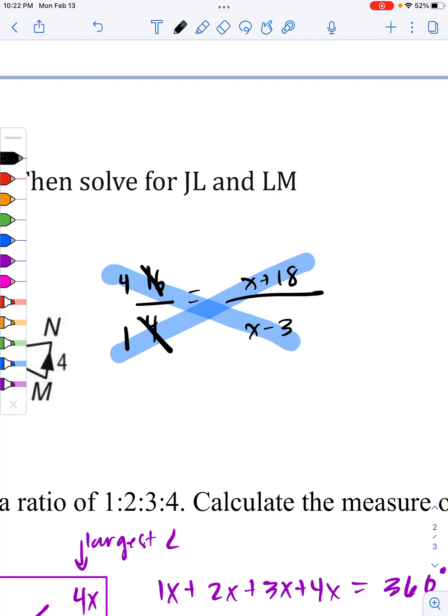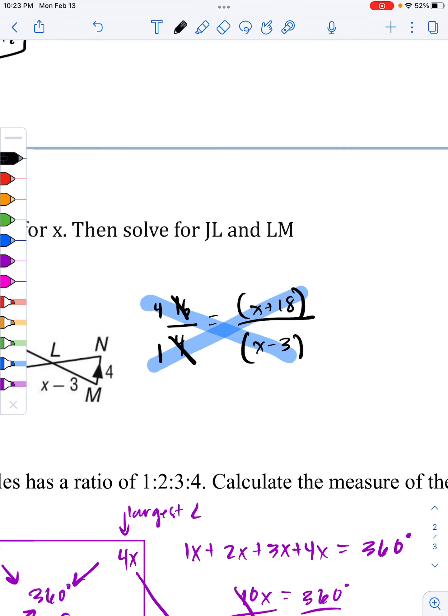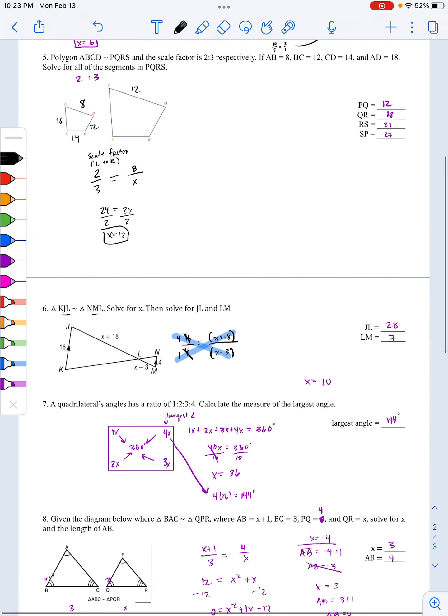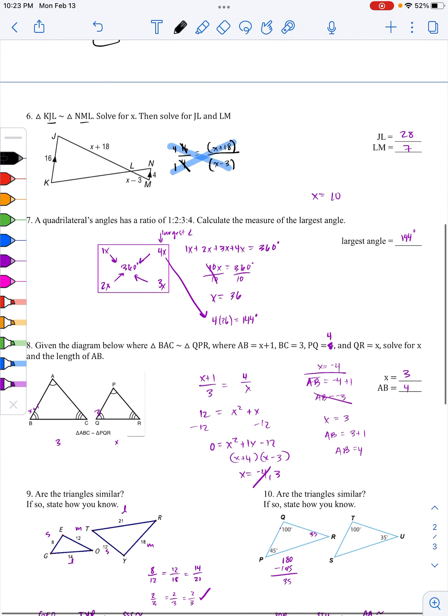16 over 4 simplifies to 4 over 1. And then from here, we could actually cross multiply properly. Remember what we learned on the first page? Anytime you have addition or subtraction, you should put parentheses around them.